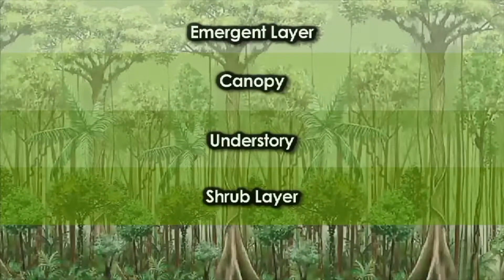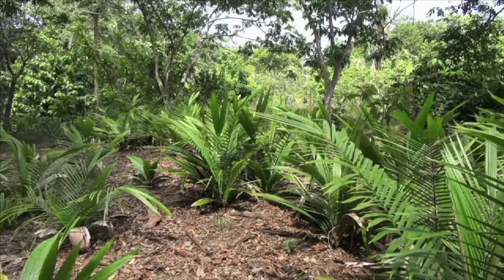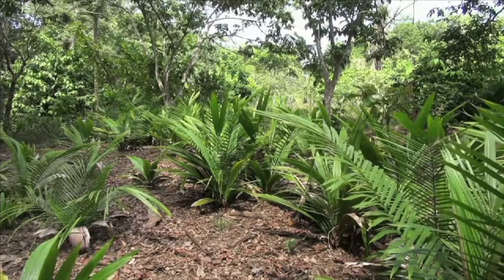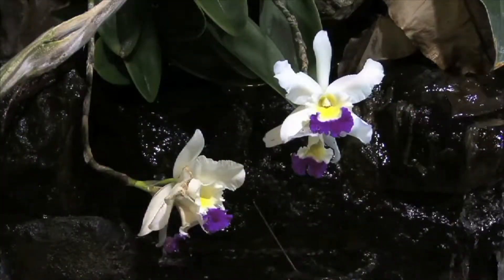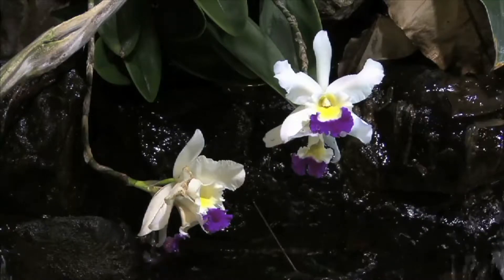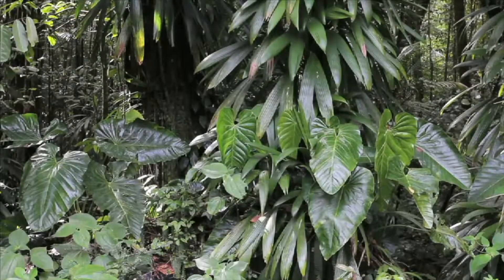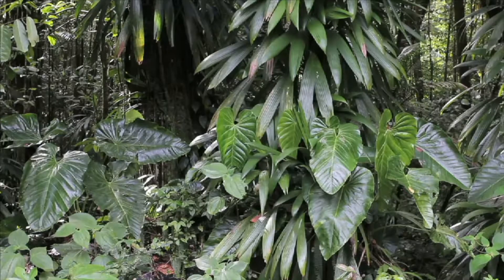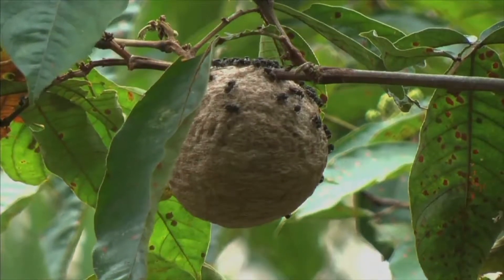The next layer below the understory is the shrub layer. The shrub layer is mainly made out of bushes. It contains most of the rainforest's orchids. It is the smallest layer of the rainforest. It is normally very dark, wet, and warm. Many insects live in the shrub layer.